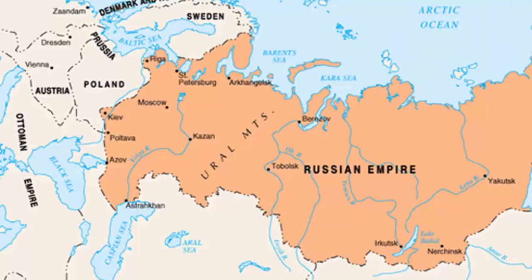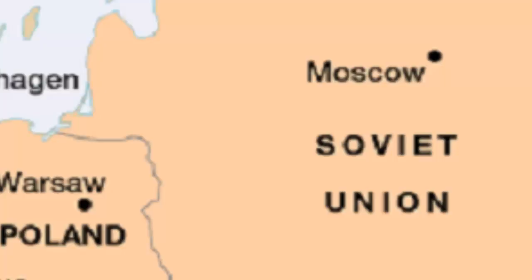Throughout history, Russia had been vulnerable to attacks on its western side. In the 17th century, the Polish invaded Russia. In 1812, it was Napoleon Bonaparte who took his shot at conquering Russia. And most recently, it was Germany that attacked Russia during World War One and World War Two.